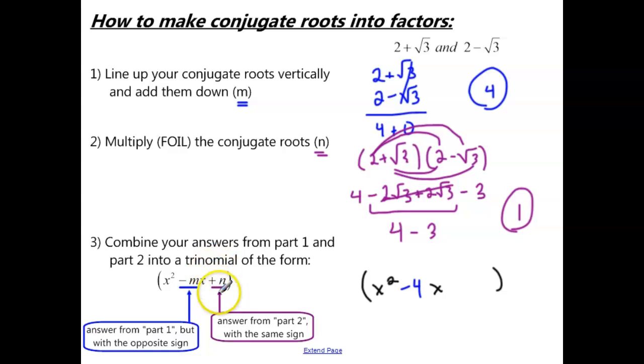Then, this plus n at the end, that's our answer from part 2 with the same sign. So since we had a positive 1 in part 2, that's going to be our third term in our trinomial. So this is going to be one of the trinomials that we use in finding our final polynomial equation.